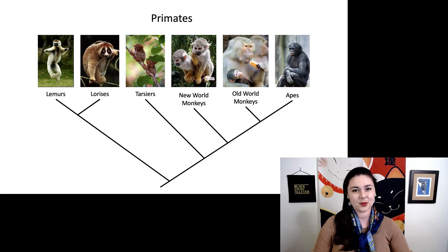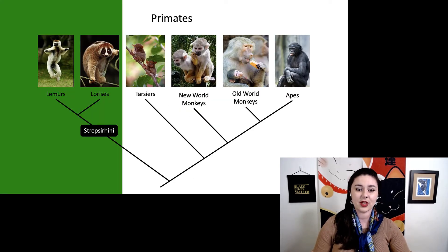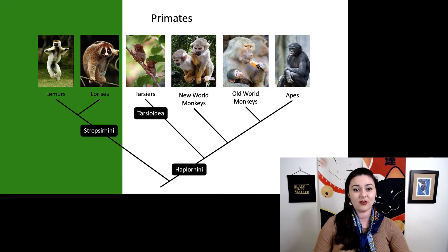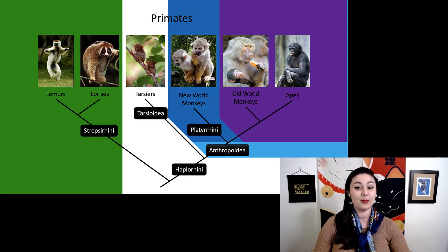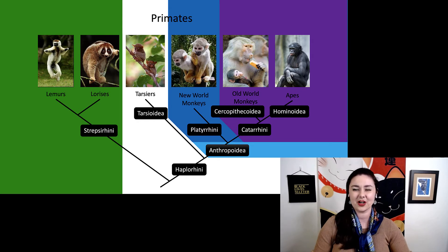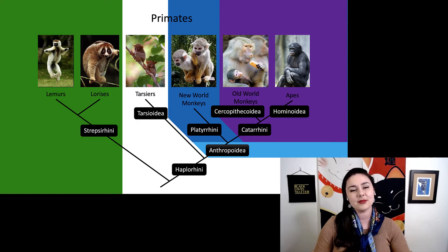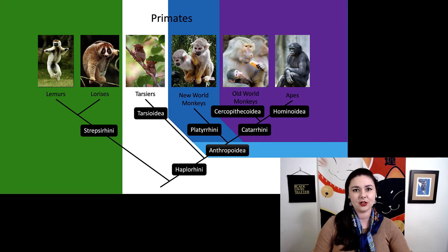Let's remind ourselves about primates and all the different groups. We have our strepsirrhines on one side and our haplorhines on the other. Within haplorhines, we have our tarsiers, and then we have our anthropoids. Within anthropoids, we have our platyrrhines — the new world monkeys — and then our catarrhines. Within catarrhines, we have our cercopithecoids, or old world monkeys, and then our hominoids, or apes. If you need to, go back and review the primatology module for the different traits of these primate groups.